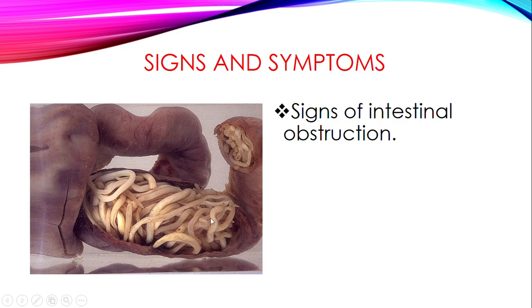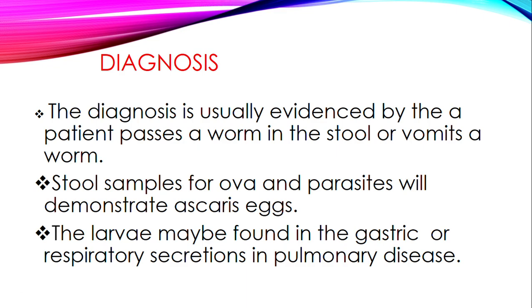Earlier we mentioned signs of intestinal obstruction. This is what can happen: the worms have matured and blocked the intestines. This is a severe complication, meaning the child or patient may need to undergo an operation for these worms to be removed.